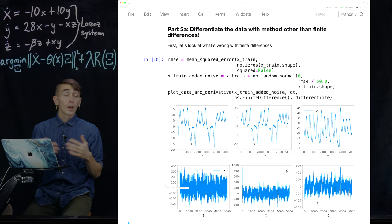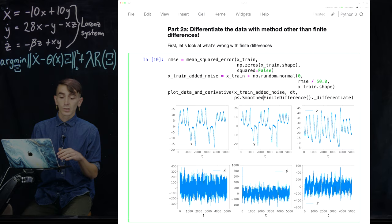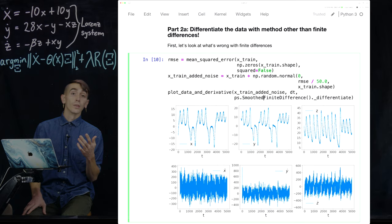Well, finite differences aren't the only way to differentiate data. And one sort of easy improvement you can do is just use smoothed finite differences. So this just applies some smoothing filter before you do the finite differences. But there are actually a whole host of other differentiation methods available that you can use to avoid amplifying the noise in this way.